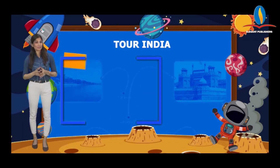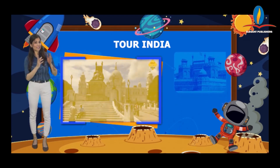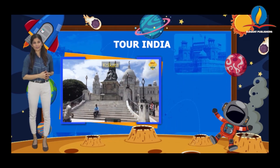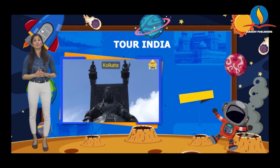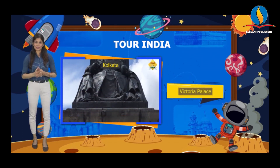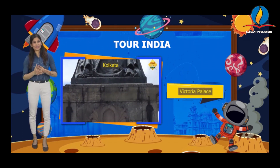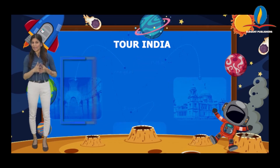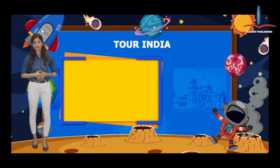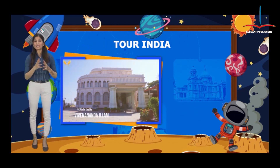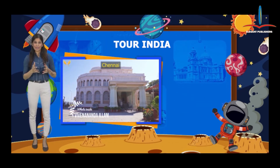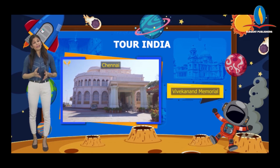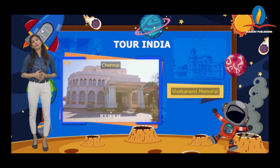Next, the place is connected to Kolkata. It is Victoria Palace. So write the answer: Victoria Palace. And the last one, it is connected to Chennai, and it is Vivekananda Memorial.